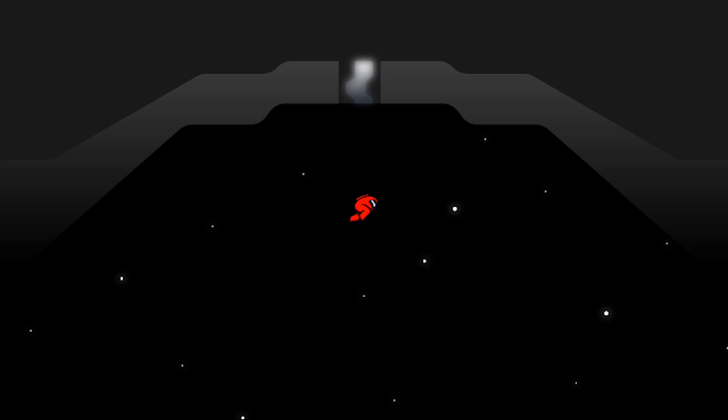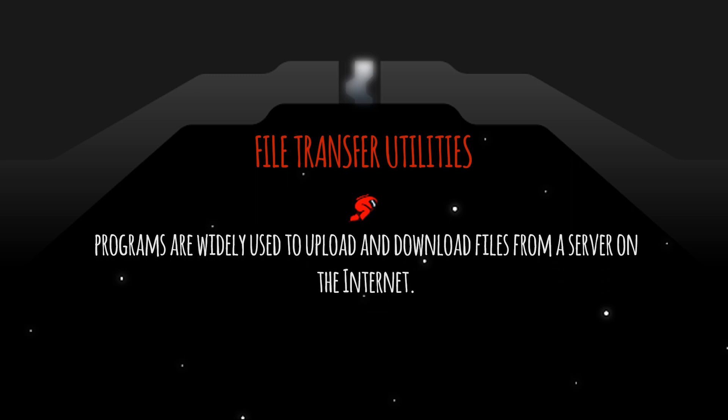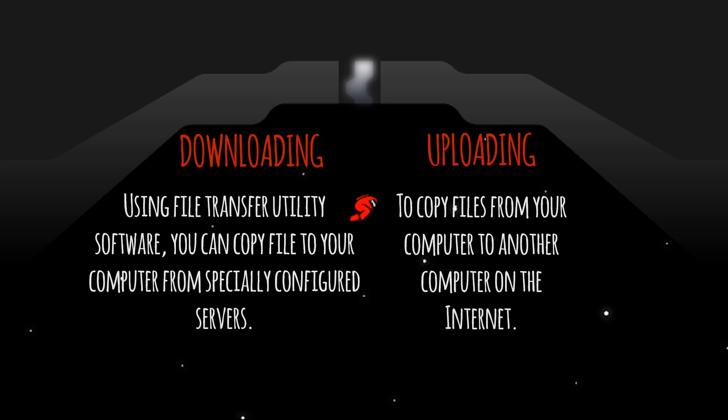Next is File Transfer Utilities. File Transfer Utilities programs are widely used to upload and download files from a server on the internet. Using File Transfer Utilities software, you can copy files to your computer from specially configured servers — this is called downloading. Uploading is when you copy your files from your computer to another computer on the internet.